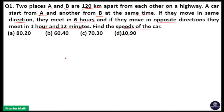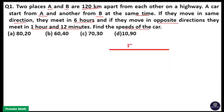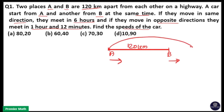We have to find the speeds of the cars. The distance between A and B is 120 km. A car from A and a car from B move in the same direction. If they meet in 6 hours, these two cars will meet in 6 hours — this is the meeting point.